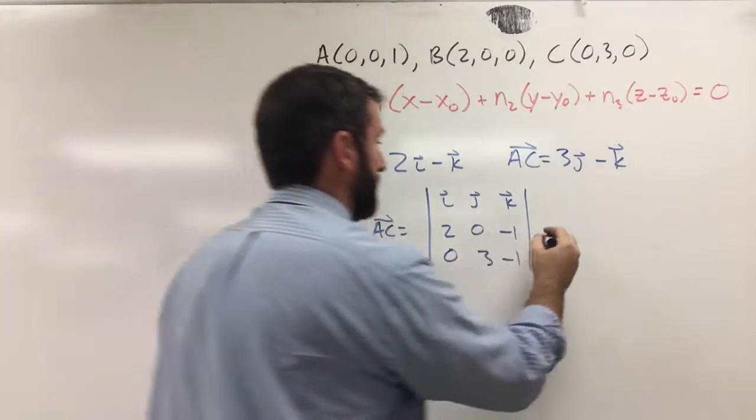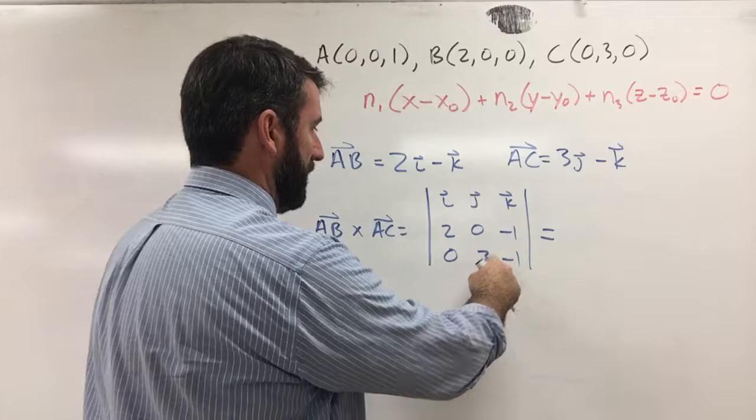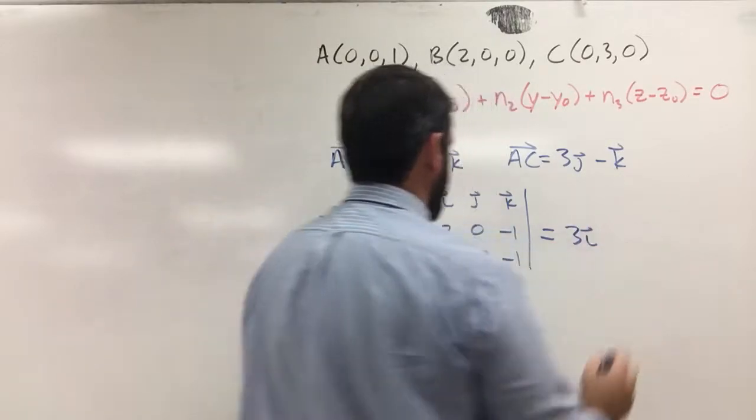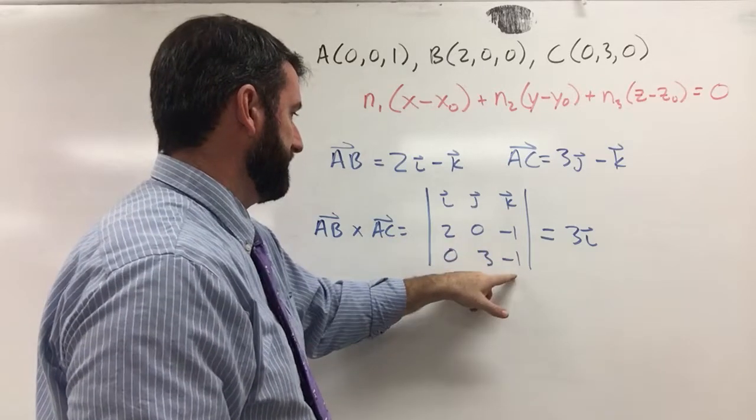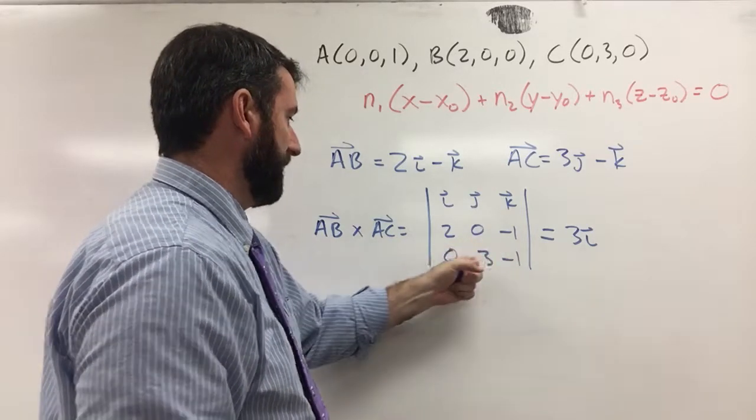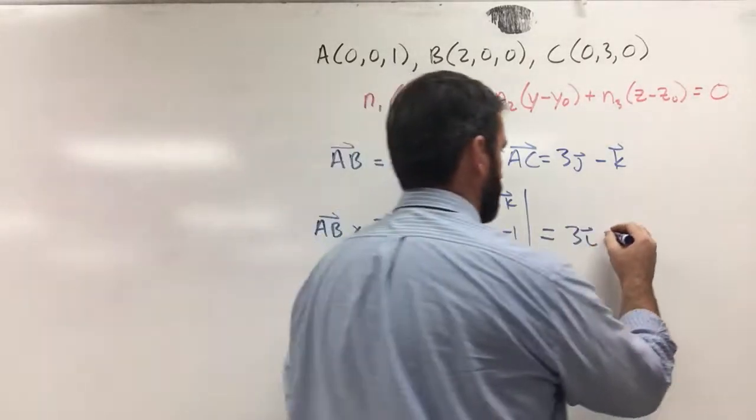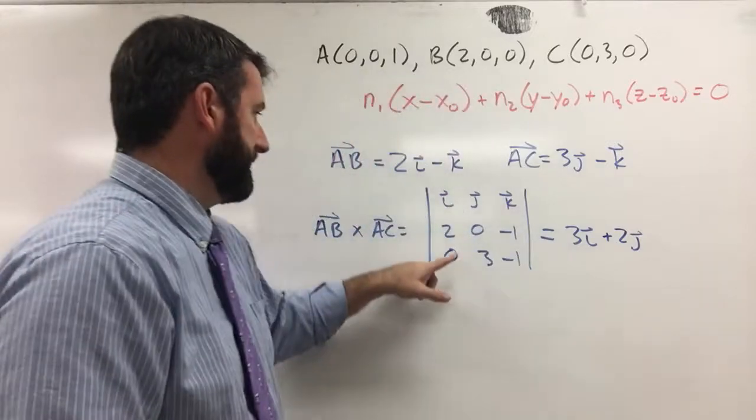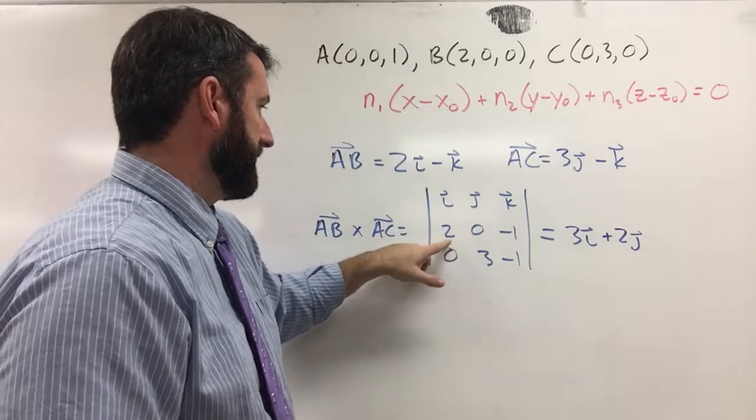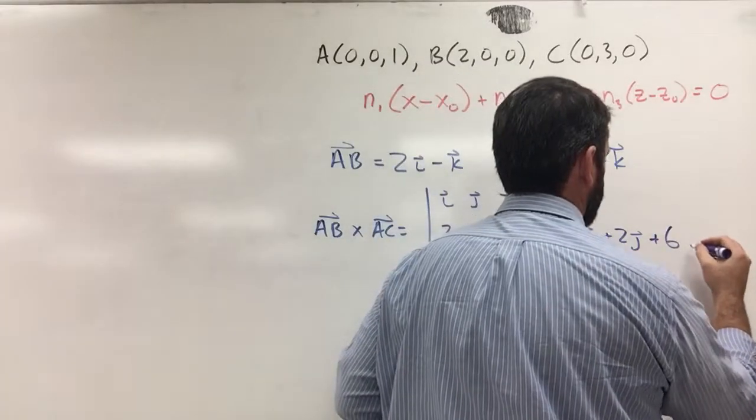And then this determinant is going to be, let's see, this is 0 plus 3. So 3i. And then, 2, negative 2 minus 0. But it's minus negative 2. So this is going to be plus 2j. And then k is going to be 6 minus 0. So plus 6k.